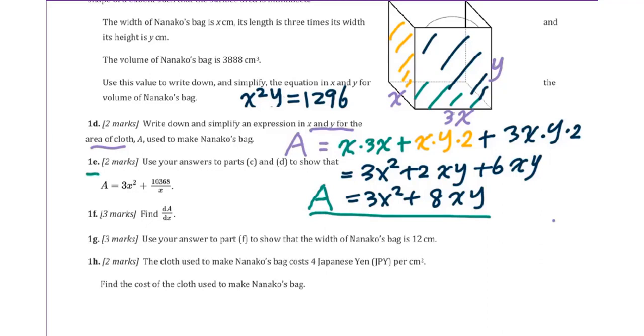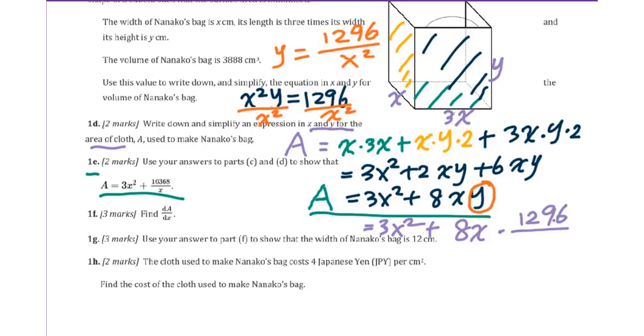For 1e, use your answer to parts c and d to show that area equals 3x squared plus 10368 over x. Basically, we need to change this y into expression including x. From here, we divide by x squared both sides. Therefore, you can get y equals 1296 over x squared. Therefore, we plug in here. You will get 3x squared plus 8x times 1296 over x squared. Therefore, you will get 3x squared plus 10368 over x.